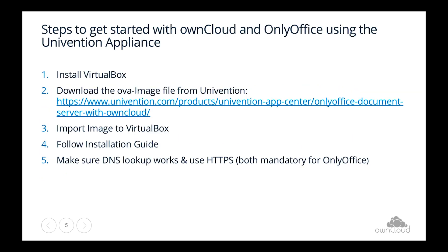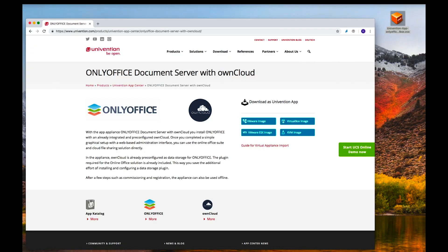So what are the steps to get started with ownCloud and OnlyOffice? First, you need some kind of virtualization environment — in this case I'm using VirtualBox. Then you download the correct image for your hypervisor, import it, go through the installation guide, and after that do some DNS configuration and set up HTTPS to make sure OnlyOffice works properly. That's it for the introduction — let's get started.